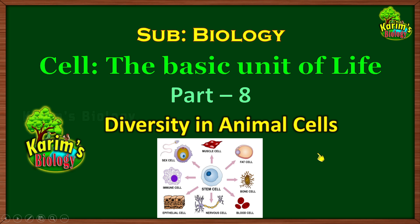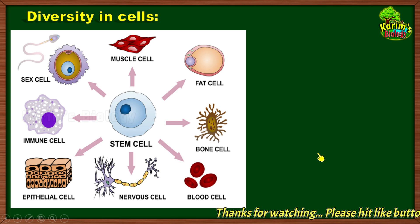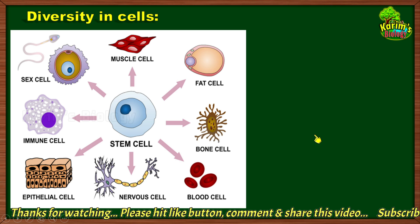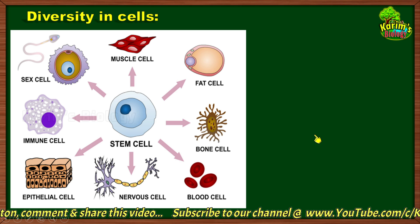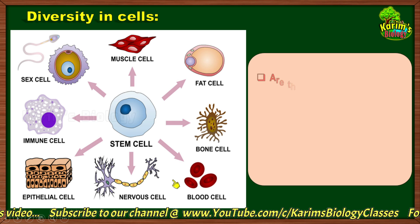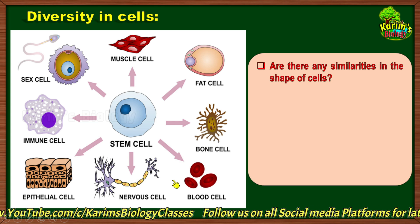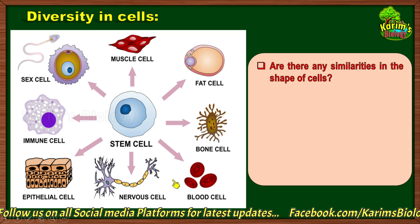Let us find out that and enter into the topic. Before we begin, I want to show you the picture of different types of animal cells. Though they are different types of cells, they may or may not all be present in the same animal. Have a keen observation on the shapes and the parts present in the cells because I am going to ask you some questions on this concept. The first question is: are there any similarities in the shape of the cells?